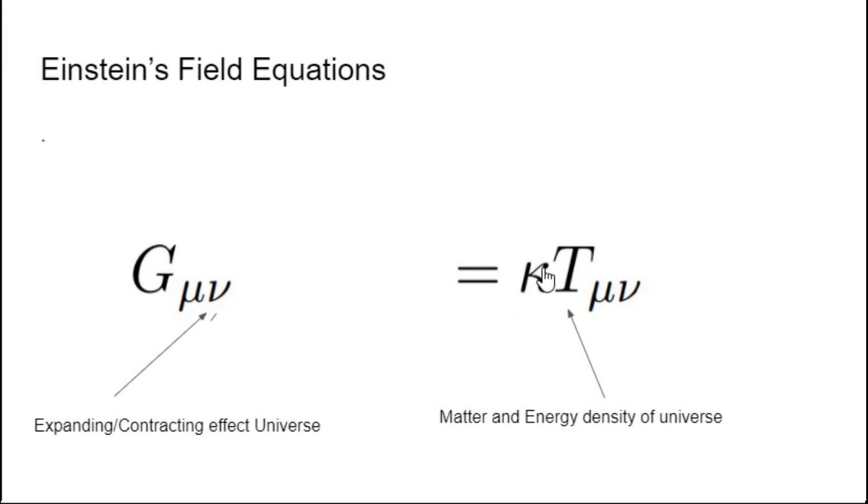his theory of general relativity, his equations showed him that the universe was expanding. To him, this idea of an expanding universe seemed so displeasing that he added a contracting effect to his equations, therefore to have a static universe.